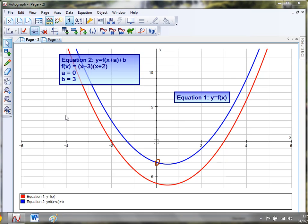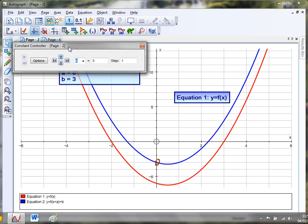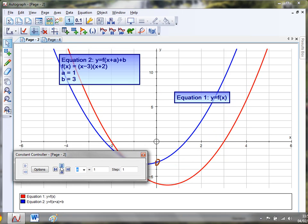Two videos ago, which was Autograph video 54, we looked at how we can use Autograph and its wonderful constant controller to introduce the concept of functions to students and have a look at what happens as we transform things. We had a look at y equals f of x plus a with b added on to the end of it. If we use the constant controller, as we increase the value of a, the function seems to shift to the left, and as we increase the value of b, the function seems to shift upwards.